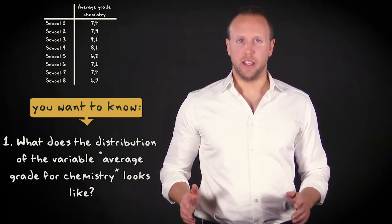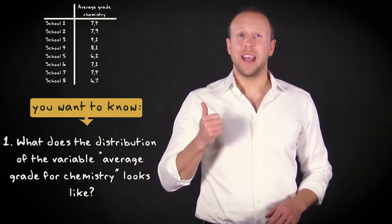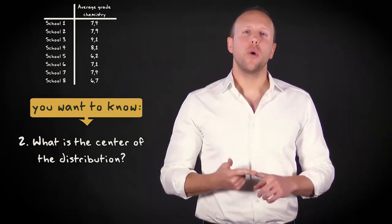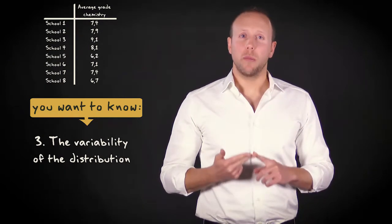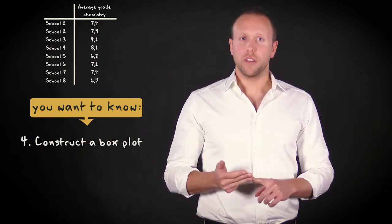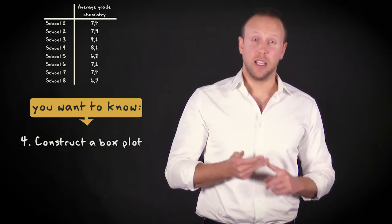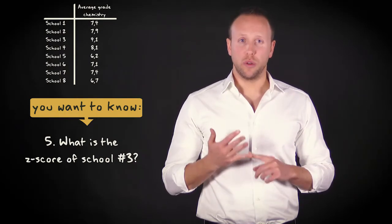Now, imagine you want to know a couple of things. First, you want to know what the distribution of the variable average grade for chemistry looks like. Second, you want to know what the center of the distribution is. Third, you want to know more about the variability of the distribution. Fourth, you want to make a boxplot to visually represent center, variability and outliers. And fifth, you want to know what the z-score of school three tells you.